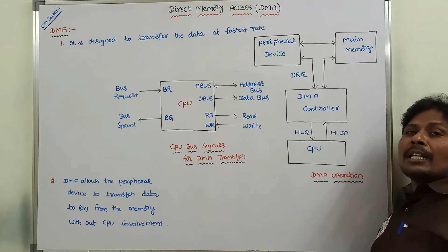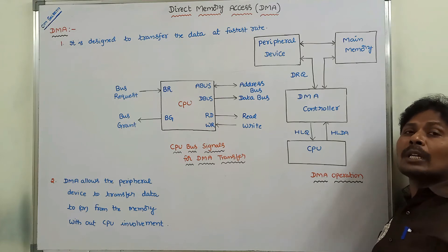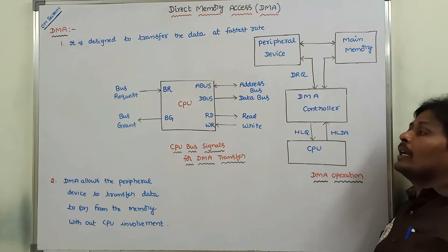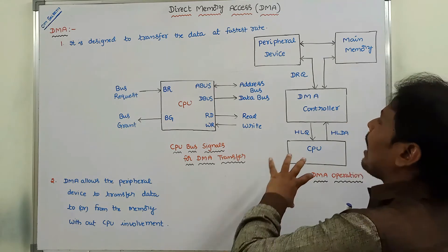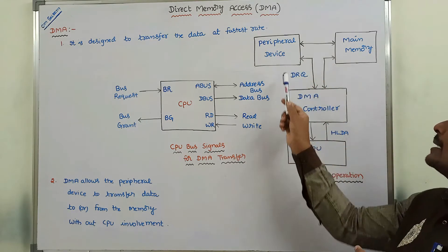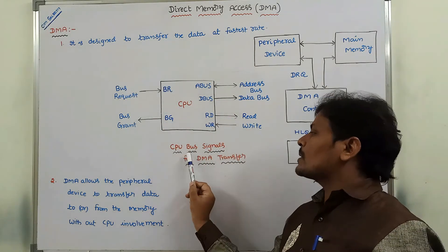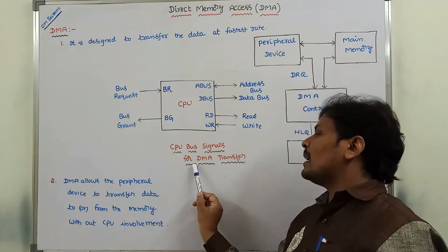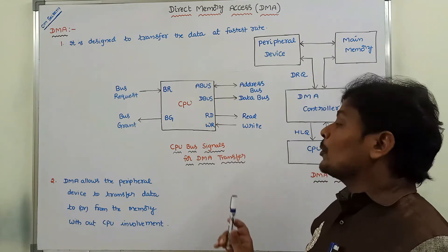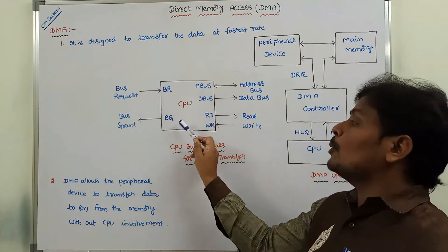To perform the DMA transfer operation, the CPU uses two control signals that facilitate the DMA transfer. This DMA operation can be explained using a diagram showing CPU bus signals for DMA transfer.